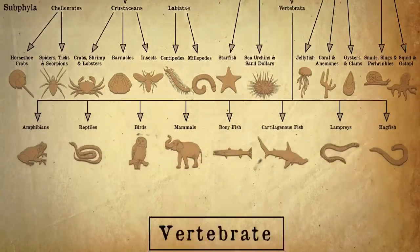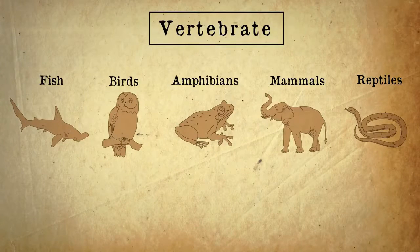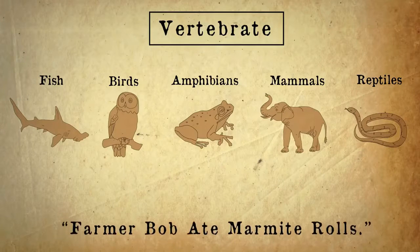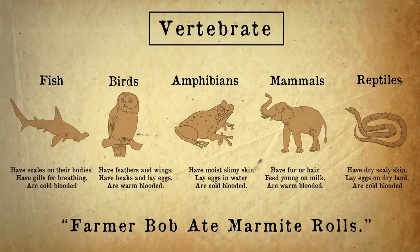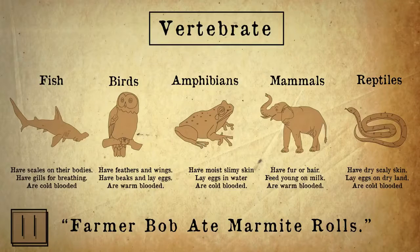Let's have a look at the vertebrates in more detail. There are many different classes of vertebrate, but the five most well-known ones are fish, birds, amphibians, mammals, and reptiles. Again, make up a little acronym to help you remember — Farmer Bob Ate Marmite Rolls. Each class has different characteristics that define them, like mammals, which have fur or hair, feed their young on milk, and are warm-blooded. Pause the video and have a look at the differences for each of these five common vertebrate classes.